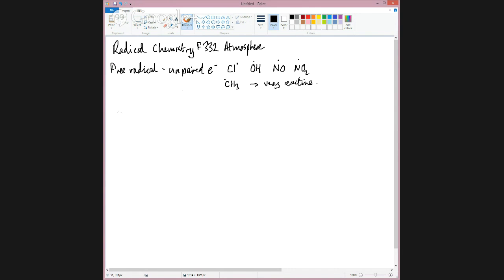So how do they form? Well, there's one way you make radicals, and that's by breaking a bond. So if I take chlorine, for example, this is a chlorine molecule. And if I break it into two chlorine radicals, now I can do this with some ultraviolet radiation.